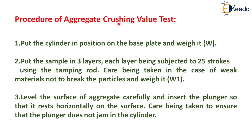Procedure of aggregate crushing value test: put the cylinder in position on the base plate and weigh it W. Put the sample in 3 layers, each layer being subjected to 25 strokes using the tamping rod. Care should be taken in the case of weak material not to break the particles. Weigh it W1.